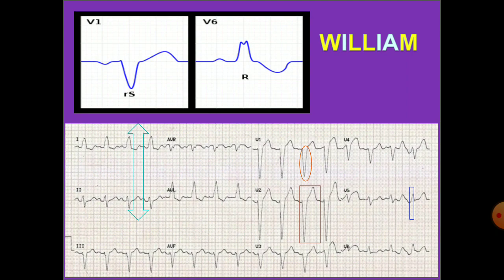In the blue rectangle, the R wave peak time is more than 60ms, that is more than 1.2 small squares. In the blue bidirectional arrow, you can see left axis deviation — it is positive deflection in lead I and negative deflection in lead II. Hence it is left axis deviation.